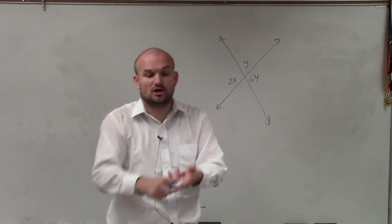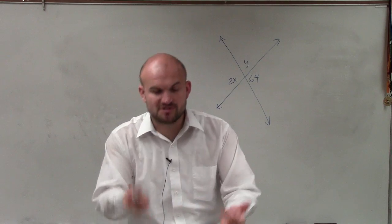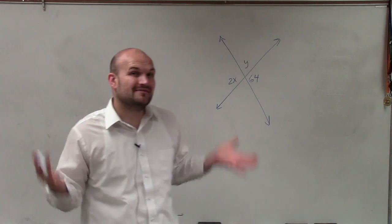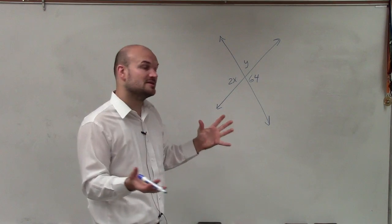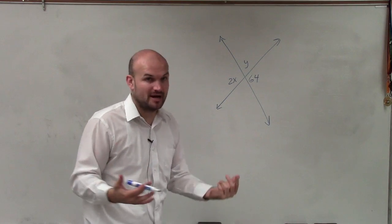When we have parallel lines and a transversal, we had alternate interior, alternate exterior, corresponding, and same-sided interior. But when we have intersecting lines, there's two different types of relationships. We have vertical angles and a linear pair, supplementary angles.